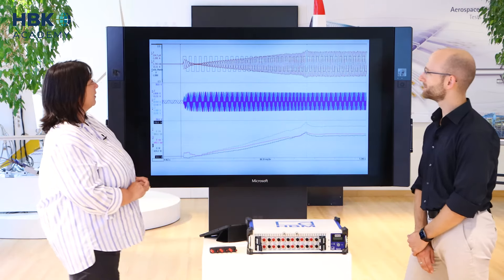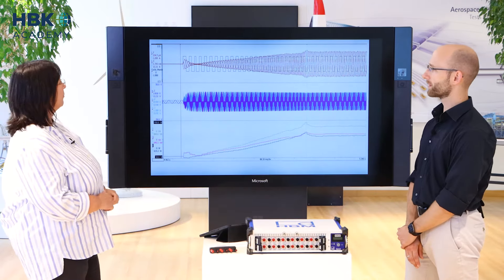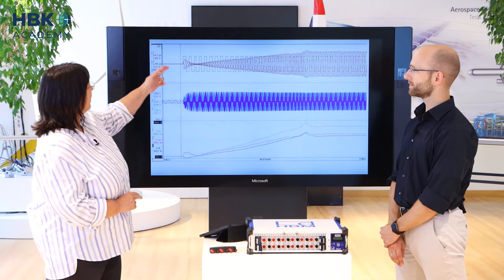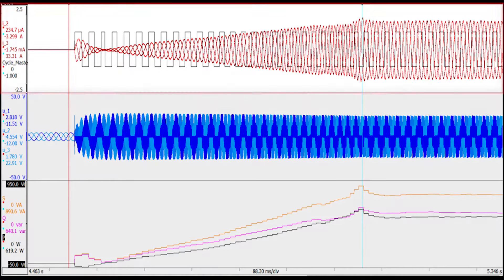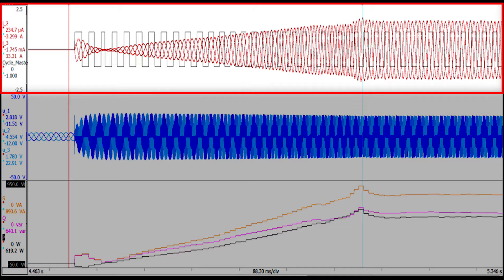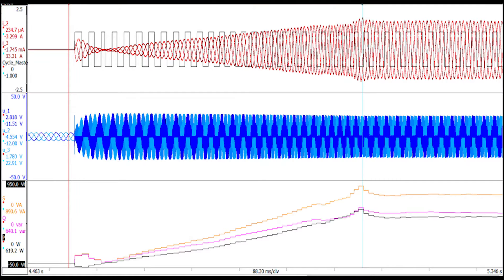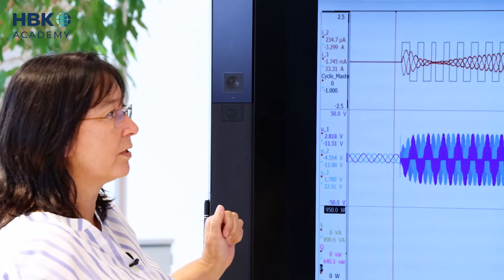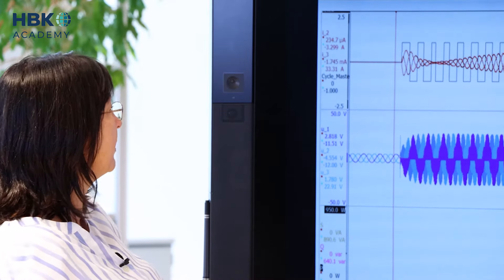So, what you can see here this is his little trip with the e-scooter and we have here in the first pane the three currents which are nearly sinusoidal and we have a so-called cycle master which I will explain in the next step.